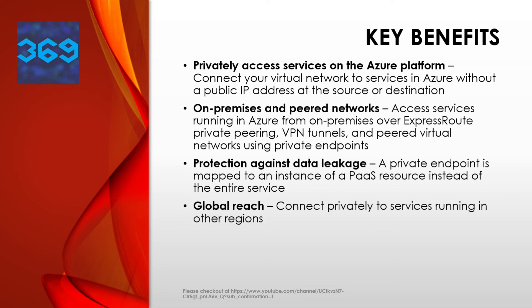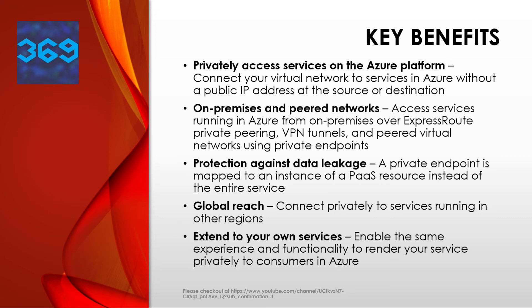Global reach: you can connect privately to services running in other regions. The consumer's virtual network could be in region A and it can connect to services behind Private Link in region B. The final key benefit is extending to your own service — you can enable the same experience and functionality to render your service privately to consumers in Azure by placing your services behind a standard load balancer. You can enable it for Private Link, consumers connect directly using a private endpoint, and you manage connection requests through an approval workflow. Azure Private Link works for consumers and services belonging to different Azure Active Directory tenants.